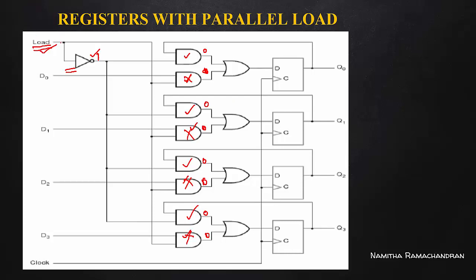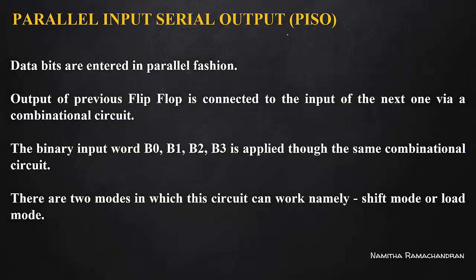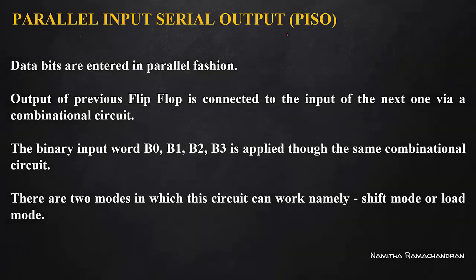Load is 1 — external input will be loaded into our register. Load is 0 — which was previously added to the output — if you want to use that value, you will retain the value. You will need to register with parallel load. For the implementation of D flip-flop, you will need to use SR. This is the parallel input serial output.